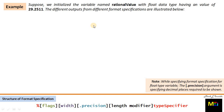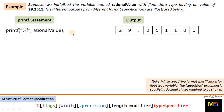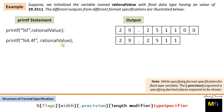Now coming on to another example regarding float data. Suppose we initialize the variable named rational_value with float data type having a value of 29.2511. The different outputs from different format specifications are illustrated below. Please note: while specifying format specification for a float type variable, the optional precision argument specifies the decimal places required to be shown. The default output without optional arguments gives values up to 6 decimal places. When we mention a precision argument with the width argument and set precision to 4, we get the output with the rational value up to 4 decimal places.